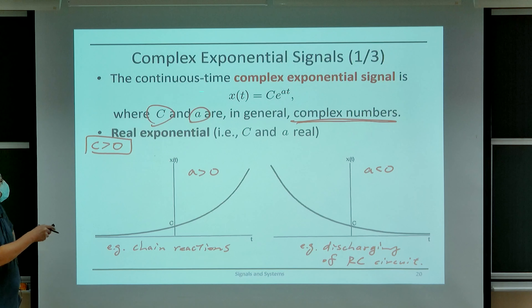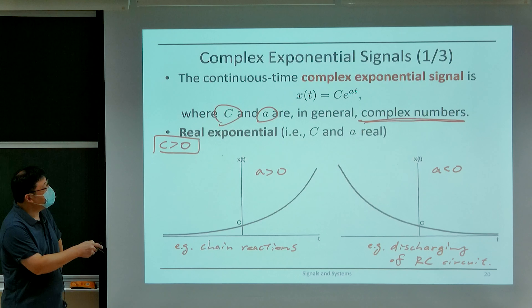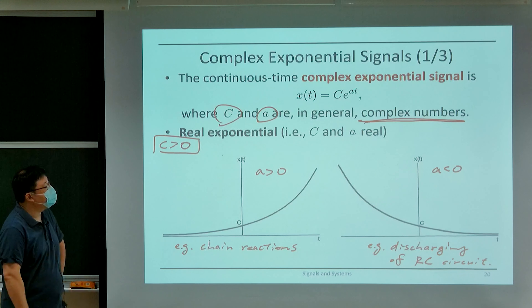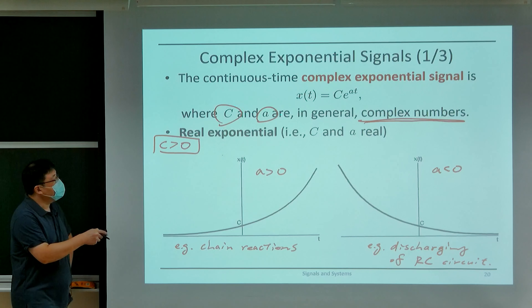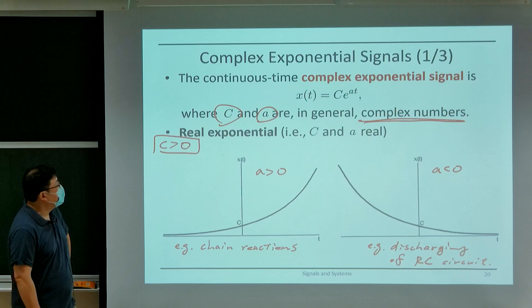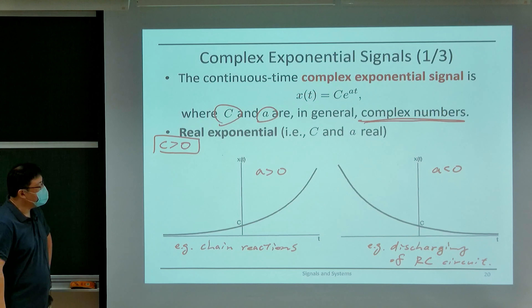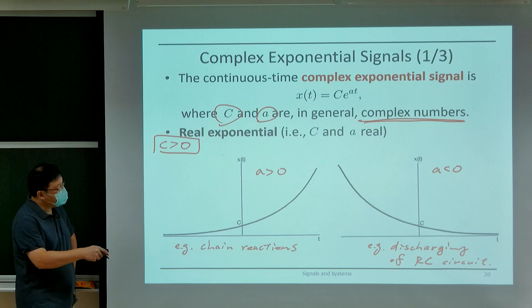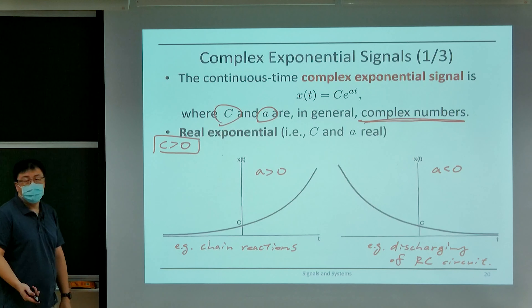Starting from continuous time, a complex exponential signal x(t) in general can be written as a constant c times e to the power a times the time index t. Now in general, c and a can both be complex numbers, but if you pick c and a both to be real, then what you have is a real exponential that either increases or decreases depending on whether the exponent a is positive or negative.